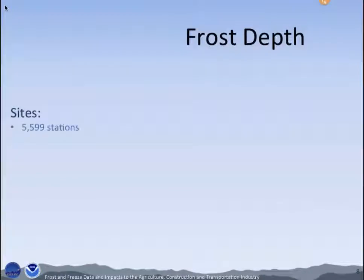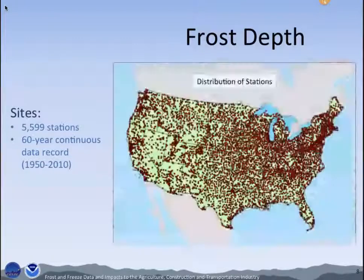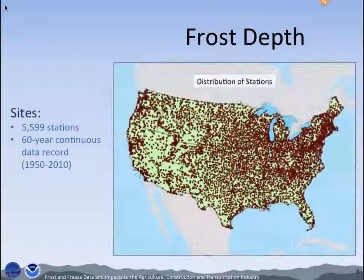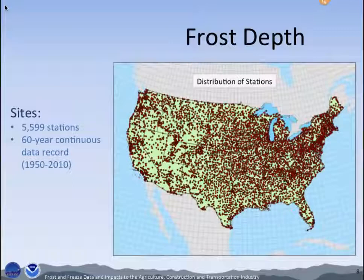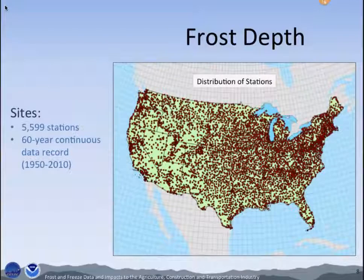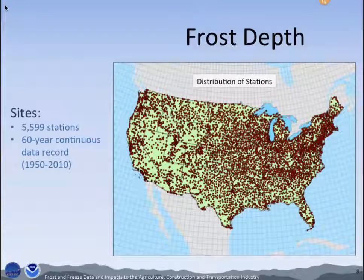So we have 5,599 stations, each station having 60 years of data records across both periods. We wanted to display this information in GIS. This is our distribution of stations as you can see here. We then decided to map the maximum frost depth and interpolate across the entire contiguous United States.